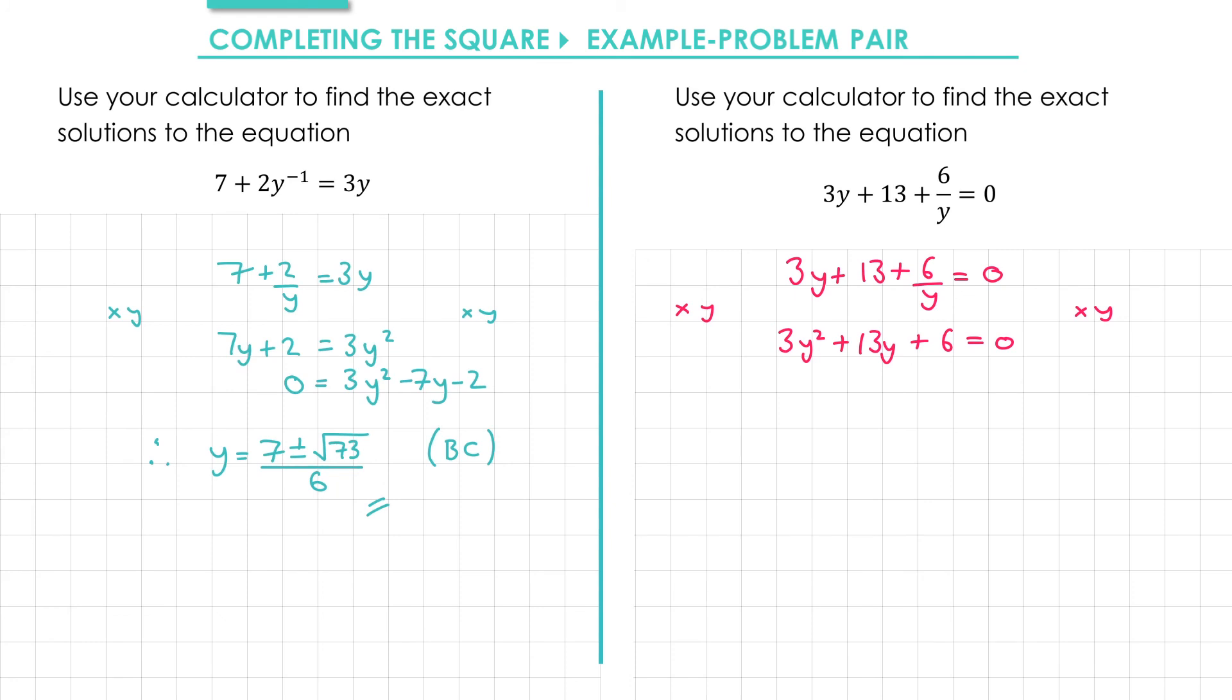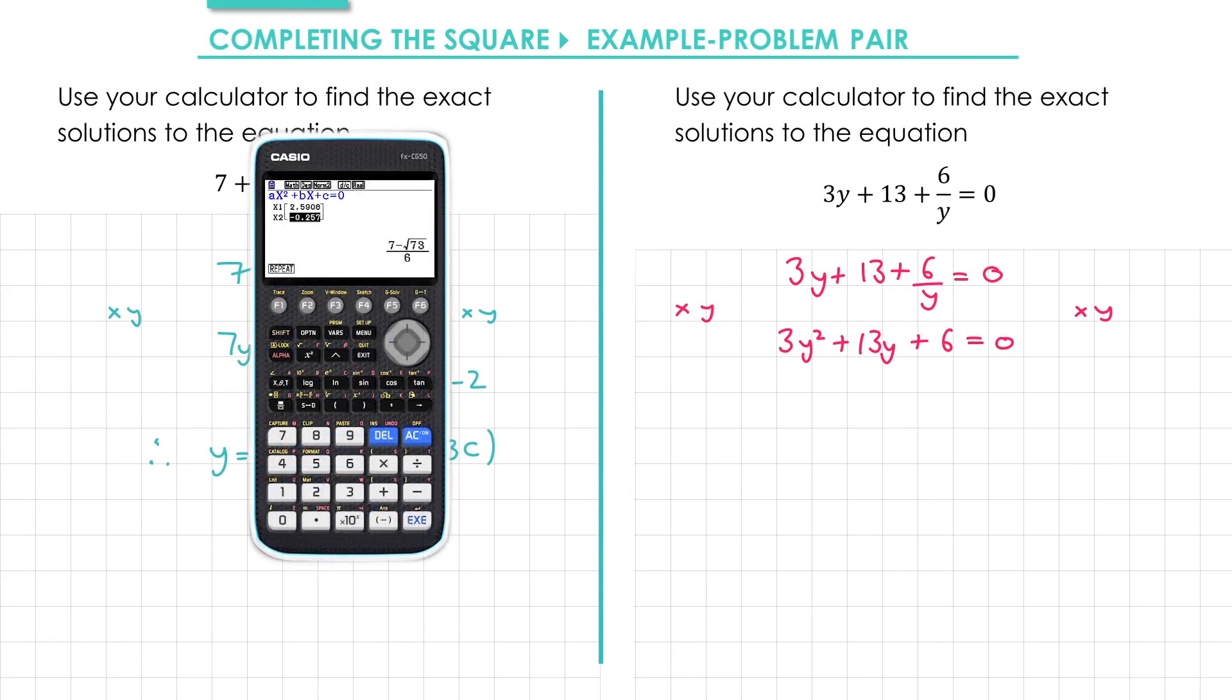Then I'm going to put it into my calculator. I'm still in the answer from the previous question, so first I press exit. Then I can type in my coefficients: 3, 13, and 6. Press exe and I get minus 13 plus root 97 over 6 and minus 13 minus root 97 over 6.